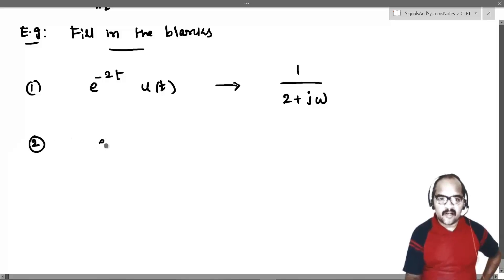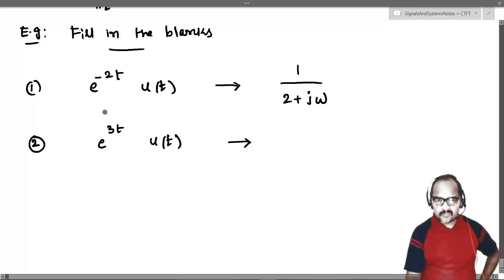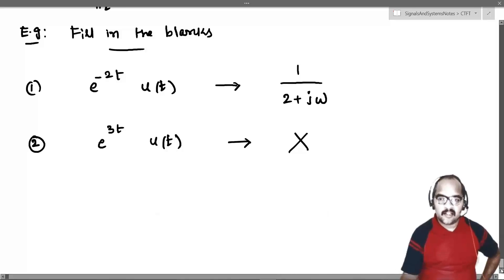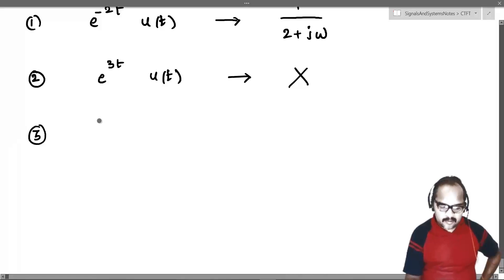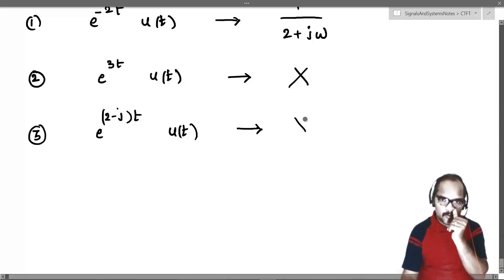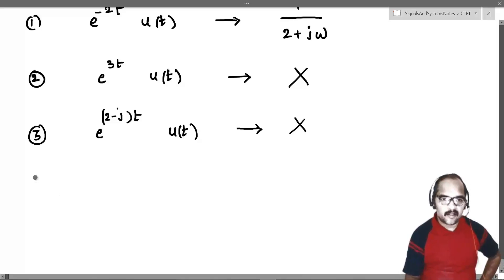Second one: e power 3t u of t. This signal will not have a Fourier transform because a is negative and hence the signal is not absolutely integrable. Third one: e power 2 minus jt u of t. Clearly this signal is also not absolutely integrable and hence will not have a Fourier transform.